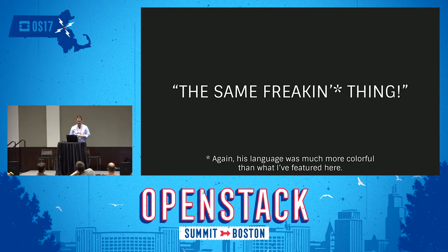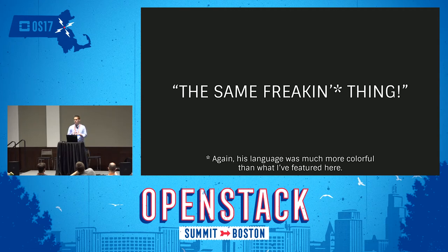Then he asked: what about someone whose competence is high but their confidence is low? I said those people are kind of mopey — you have to shove them along to the next thing; they can do it, they just won't admit it. He said the same thing. Both types were super irritating to him because he wanted people whose confidence and competence were matched up, so he knew exactly what team he had built.